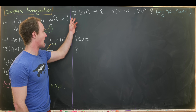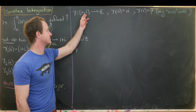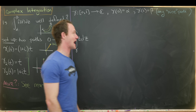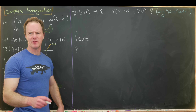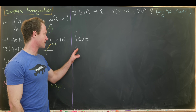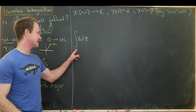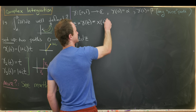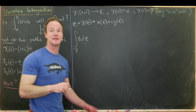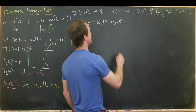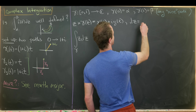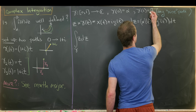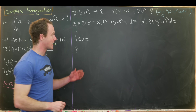To prove path independence for z, we set up an arbitrary (smooth) path gamma from [0,1] into the complex numbers, with gamma(0) = alpha and gamma(1) = beta. We want to compute the integral over gamma of z dz. Since z is on the path gamma, z = gamma(t) = x(t) + i·y(t), parameterizing the real and imaginary parts. Then dz = (x'(t) + i·y'(t)) dt.